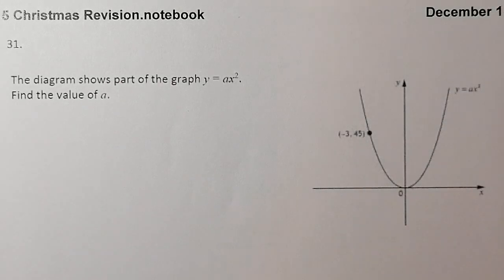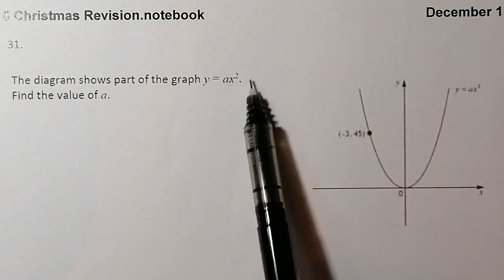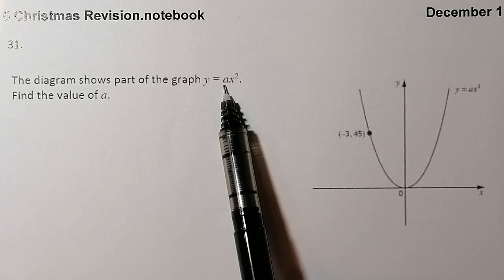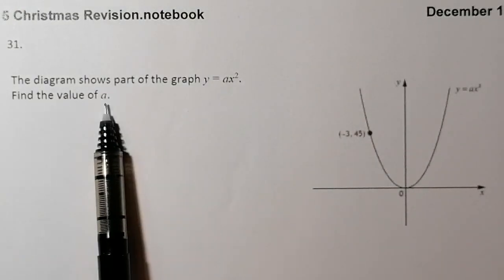So in this type of question the good thing is we've been given roughly what the graph is going to look like as an equation, but we've got a missing number that's here as 'a', and that's what we've got to find out. We've defined the value of a.